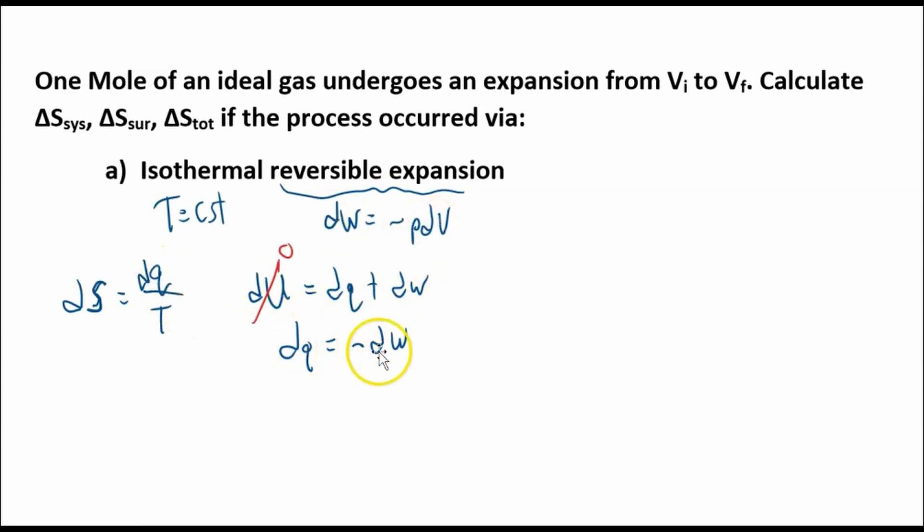So dw equals negative pdV. Well, here's dq. dq equals negative dw. dw is negative this. So the dS, infinitesimal change in entropy, is just positive pdV over T.